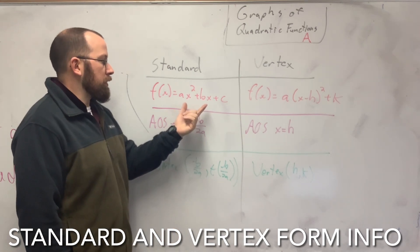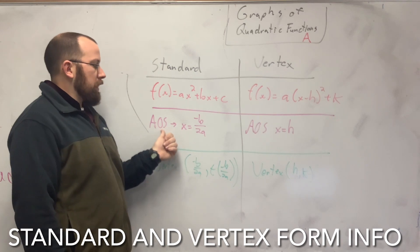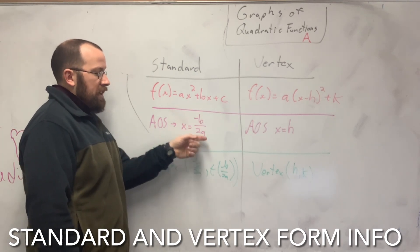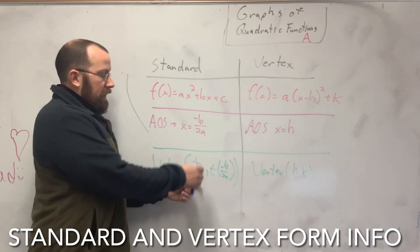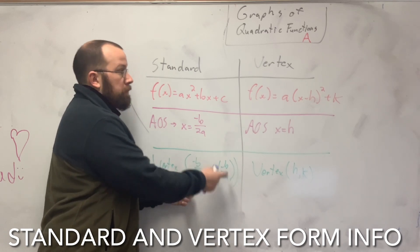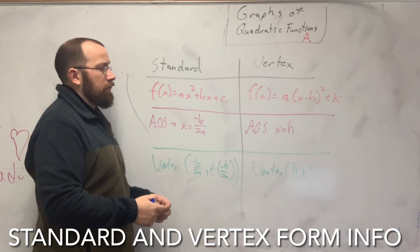So the standard form is what we've worked with so far, ax squared plus bx plus c. We found in our last video that the axis of symmetry can be found by doing x equals negative b over 2a. This is also how you find the vertex, the x point of the vertex. So you find the x point of the vertex and then you take that x and you plug it back into the equation as the x to find the entire vertex.